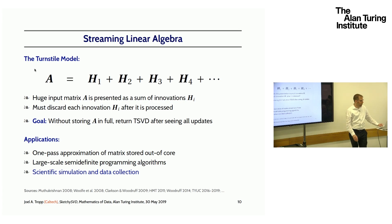Our goal is to compute a truncated singular value decomposition after we see all the updates without either storing the matrix A or trying to store the updates. We only get one look. The original application was for one pass approximation of a matrix stored out of core on a tape drive. The matrix streams off the tape into memory very slowly. As it comes in, you want to construct a representation that allows you to compute a truncated singular value decomposition. I came to this problem because these algorithms also play a role in large-scale semi-definite programming algorithms we've been developing.